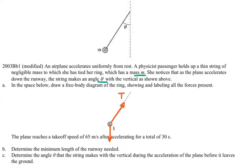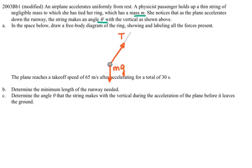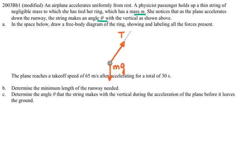For Part B, they say the plane reaches a takeoff speed of 65 meters per second, accelerating for a total of 30 seconds. So I know initial velocity was zero, and the final velocity is 65 meters per second, and the time it took is 30 seconds. For Part B, determine the minimum length of the runway needed.